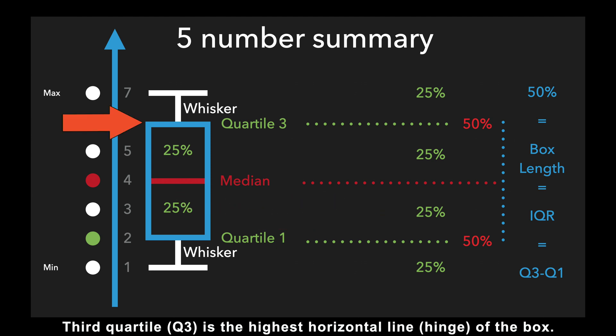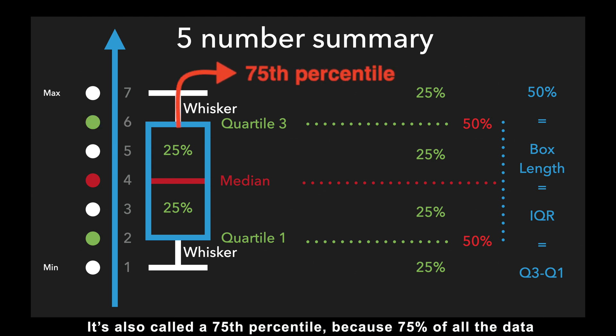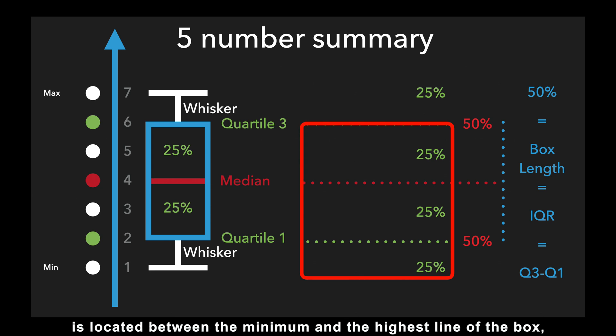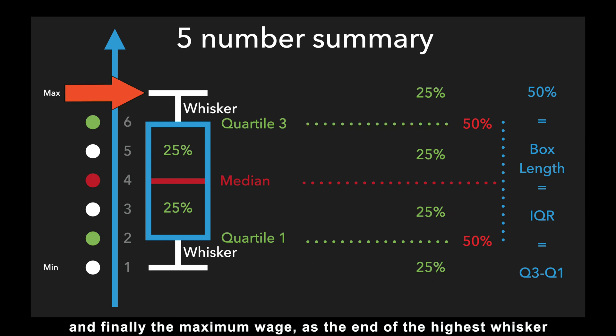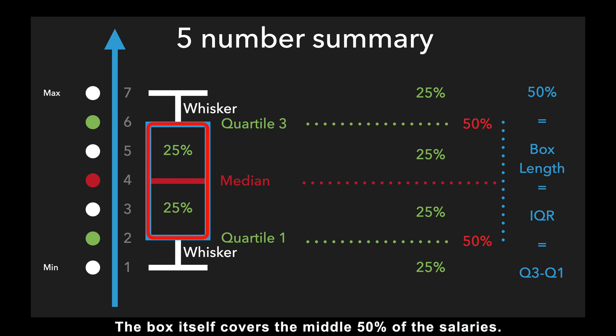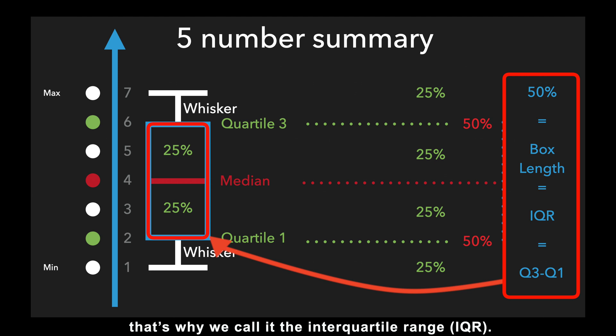Third quartile is the highest horizontal line of the box. It's also called its 75th percentile because 75% of all the data is located between the minimum and the highest line of the box. And finally, the maximum wage, as the end of the highest whisker. The box itself covers the middle 50% of the salaries. It goes from the first to the third quartile, that's why we call it the interquartile range.